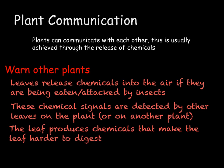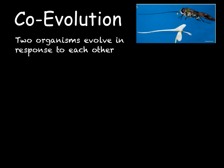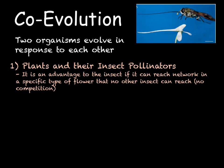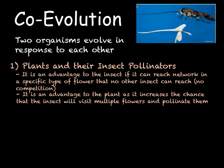These chemical messages that plants can send are an example of co-evolution, where two organisms evolve in response to each other. These can be either mutualistic or parasitic relationships. For GCSE, you need to be aware of two examples. The first is a mutualistic relationship, where plants and their insect pollinators have co-evolved. It is an advantage for an insect if it can reach the nectar in a particular flower that other insects cannot — for example, this moth and the orchid, where the orchid shape mirrors the length of the moth's feeding tubule. This is also beneficial for the plant because if only one type of insect can get nectar from its flowers, it increases the chance that insect will visit other flowers of the same type and pollinate them.